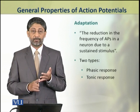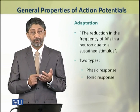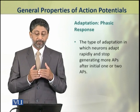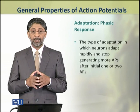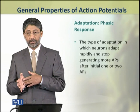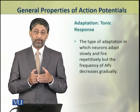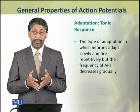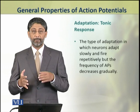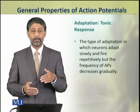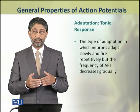There are two types of adaptation. One is phasic adaptation, also known as phasic response, and the other is tonic response. In phasic response, the neurons adapt rapidly and after generating one or two initial action potentials, they stop generating further action potentials. In tonic response, the neurons adapt slowly — they keep firing action potentials repetitively but with reducing frequency. This is a gradual decrease in the generation of action potentials.